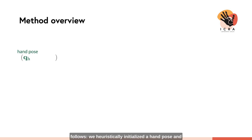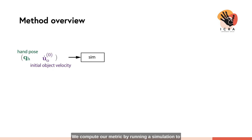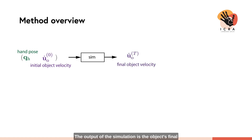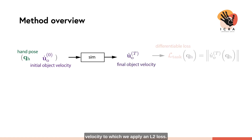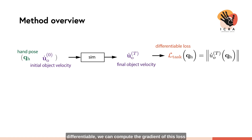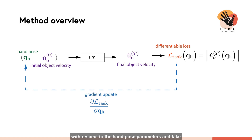Our basic approach to grasp synthesis proceeds as follows: we heuristically initialize the hand pose and apply a small initial velocity to the object. We compute our metric by running a simulation to check whether the hand dampens the object's movement. The output of the simulation is the object's final velocity, to which we apply an L2 loss. Since the loss and simulation steps are all differentiable, we compute the gradient of this loss with respect to the hand pose parameters and take an update step that improves the grasp.